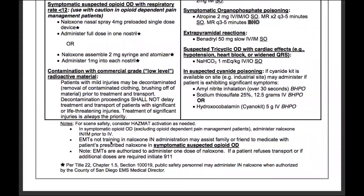EMTs not trained in naloxone IN administration may assist a family member or friend to medicate with the patient's prescribed naloxone if symptomatic. It's very important to know what a symptomatic suspected opioid overdose looks like: pinpoint pupils, pale and cool skin, and depressed respiratory drive. EMTs are authorized to administer one dose of naloxone. If a patient refuses transport or if additional doses are required, initiate 911.